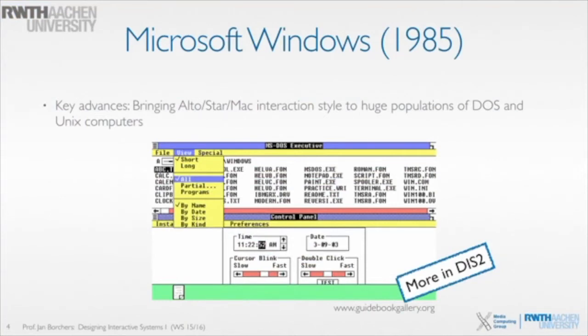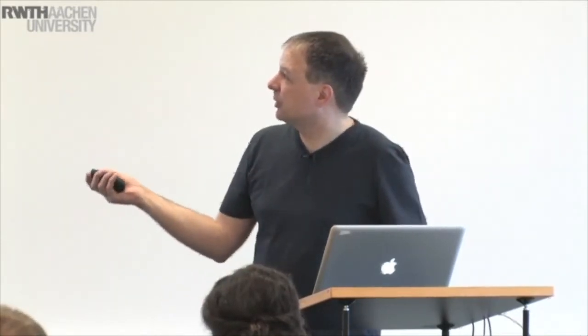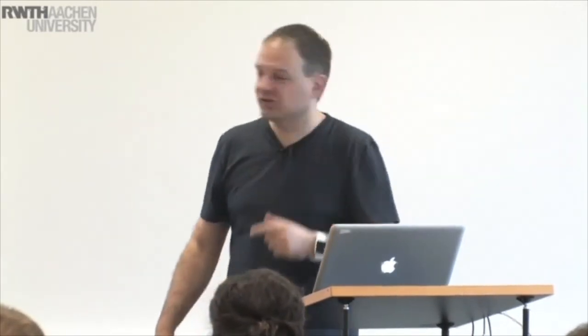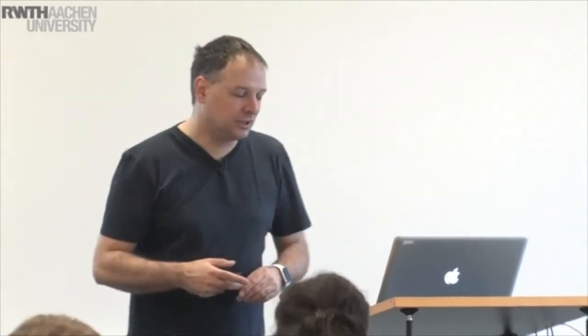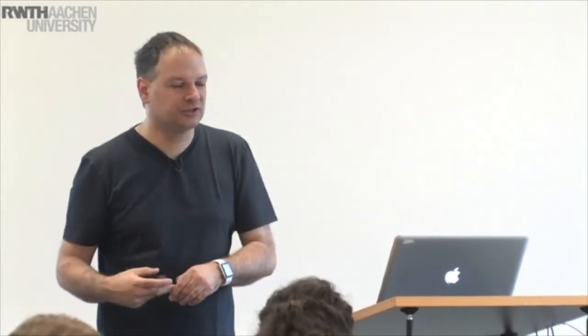So the GUI is actually not really an innovation or an improvement over what we saw before. There were, for example, in this Windows 1.0 version, no overlapping windows. So it was more like windows next to each other but not overlapping. We call this a tiling screen layout policy. We'll talk about this more in DIS2 — what the advantages and disadvantages of that are. So there will be more on Windows in general.